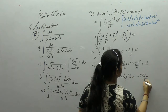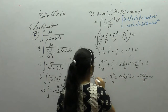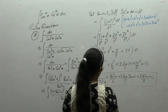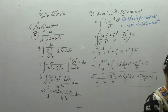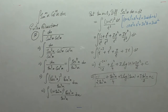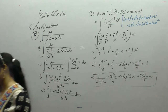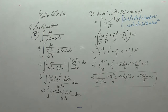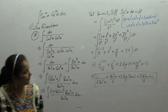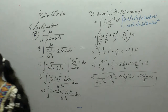x upon 2 plus c, minus 1 upon 2 tan square x, plus tan 4x upon 4 plus 3 log tan x plus 3 by 2 tan square x plus c.